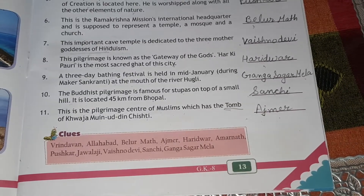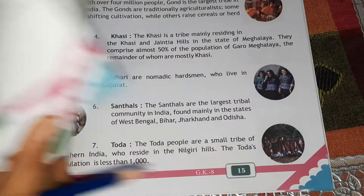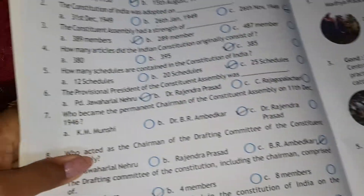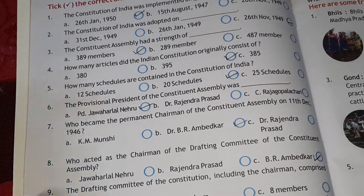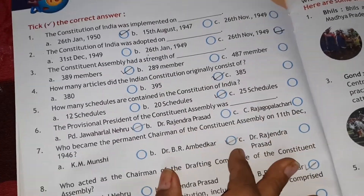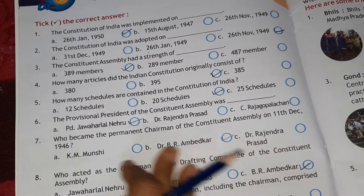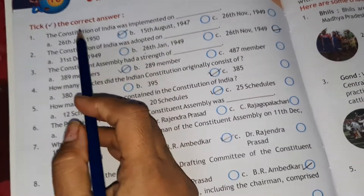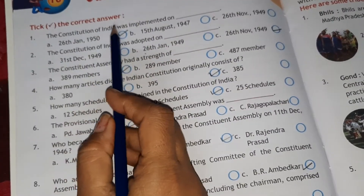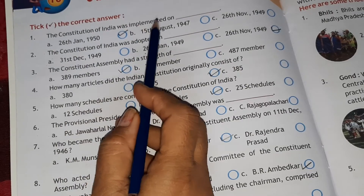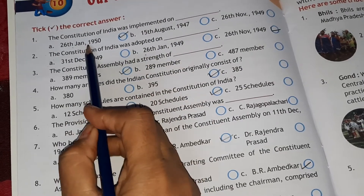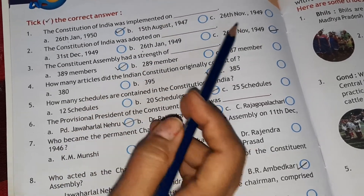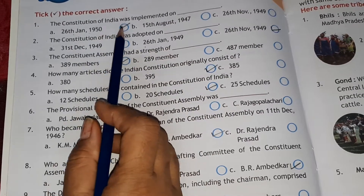That completes Chapter 9. Now Chapter 10. Tick the correct answer. The Constitution of India was implemented on 26 January 1950. The answer is 26 January 1950.